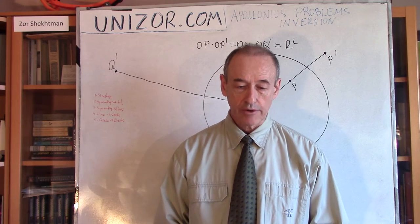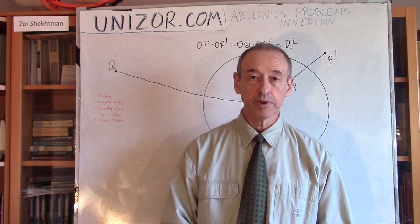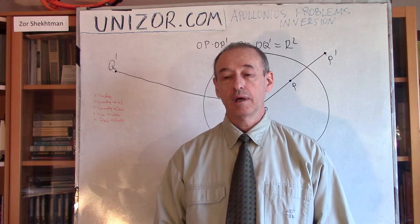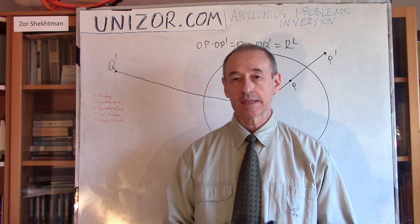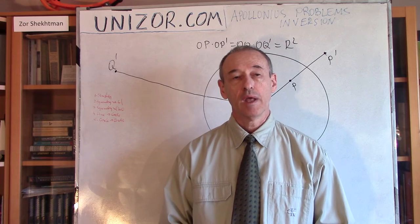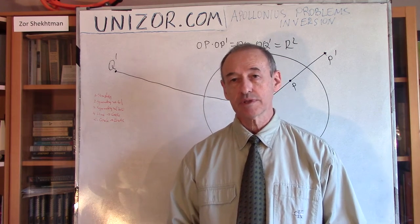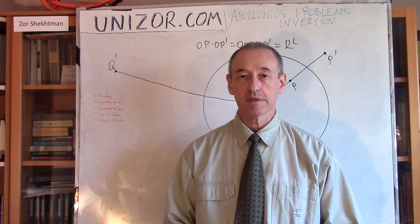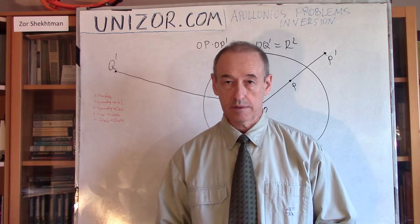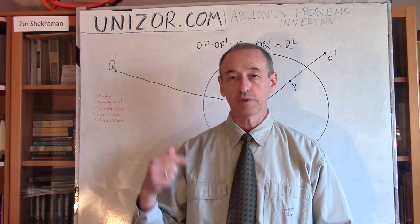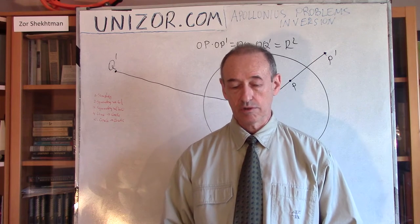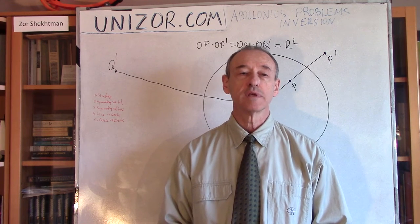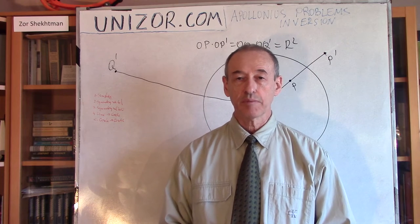The previous lecture was dedicated to relatively simple Apollonius Problems, when we have to construct a circle tangential to lines and points — well, points means passing through, actually. But the most important and interesting part of Apollonius Problems are those when the given elements include circles, like lines and circles, or circles and circles, and we have to construct another circle tangential to them. I promise there is a special approach to these problems based on a transformation called inversion.